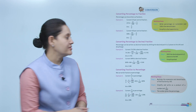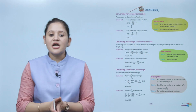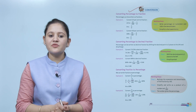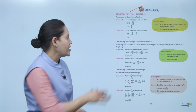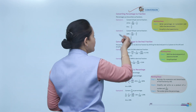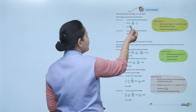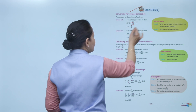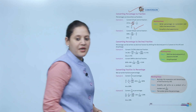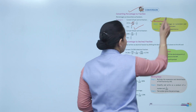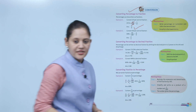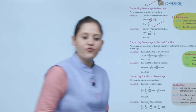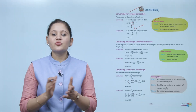Next is conversion. Converting percentage to fractions: a percentage can be written as a fraction. For example, convert 25% to a fraction — 25% means out of 100, so write 25 upon 100, remove the percentage sign, put 100 as the denominator. Simplify to the lowest term: 25/100 = 1/4. Working steps: write the percentage on the numerator and 100 as the denominator, then simplify to the lowest term.